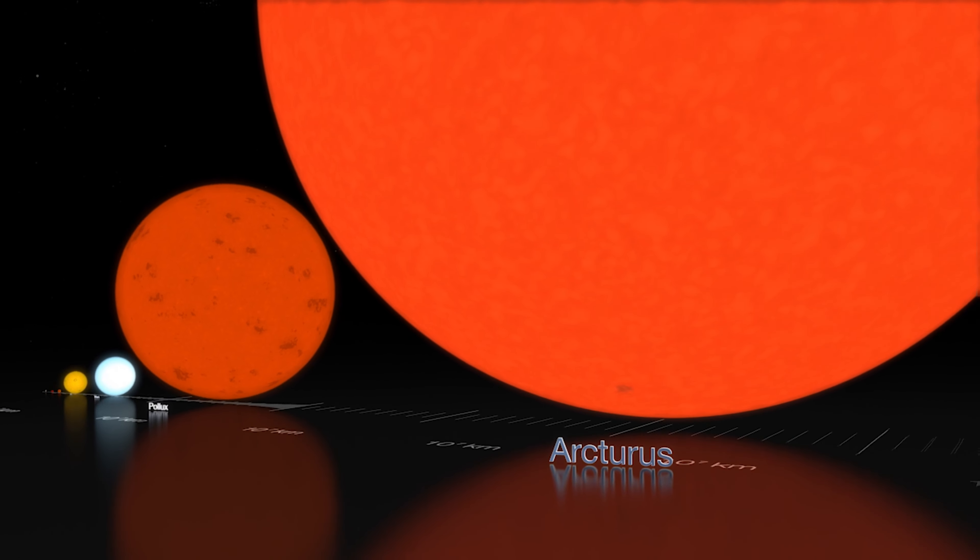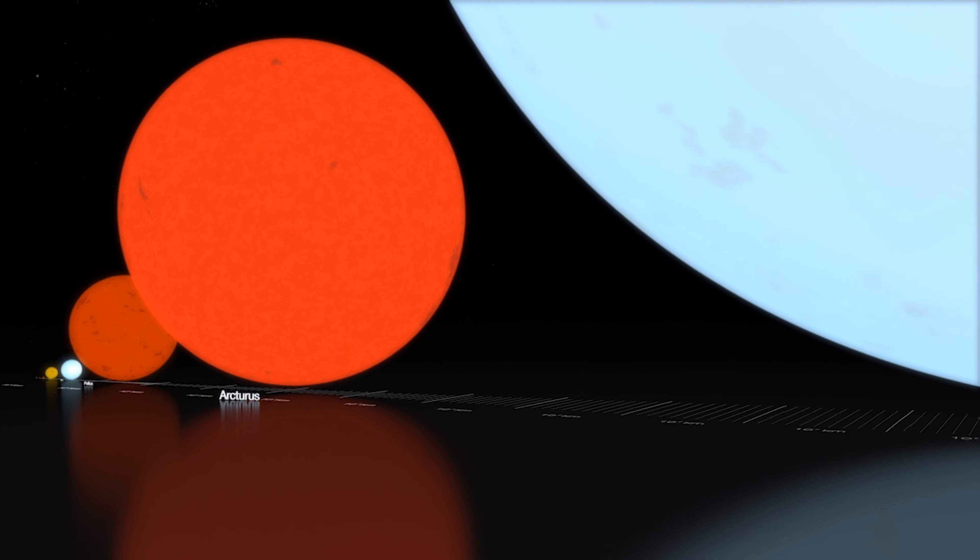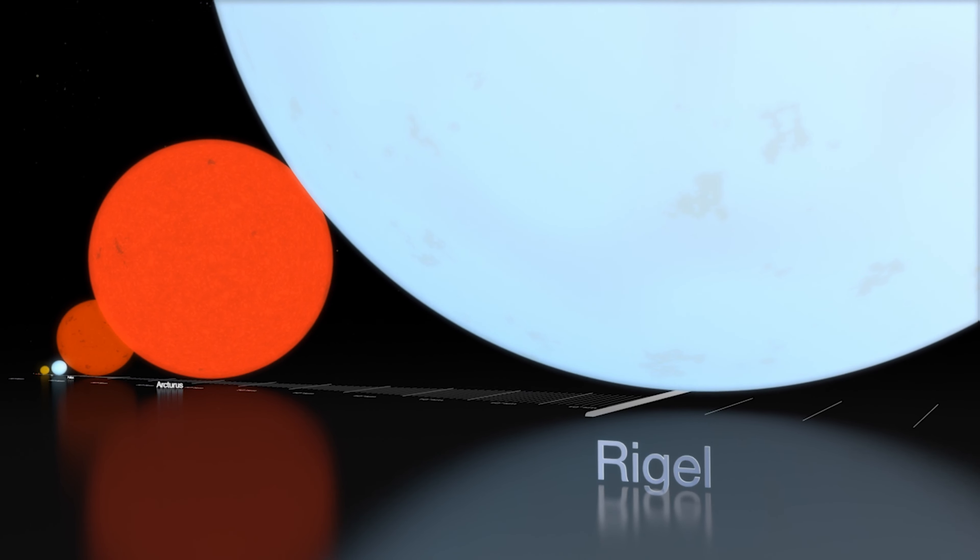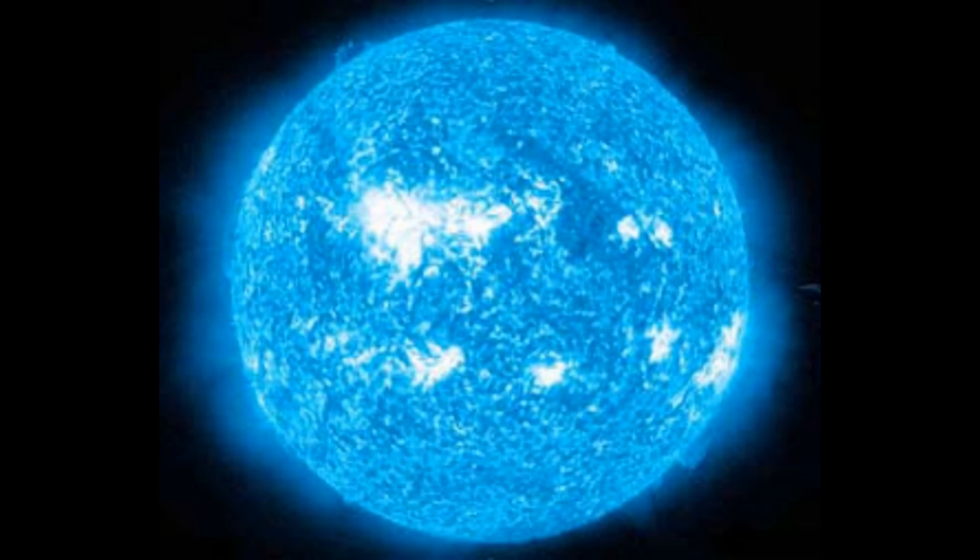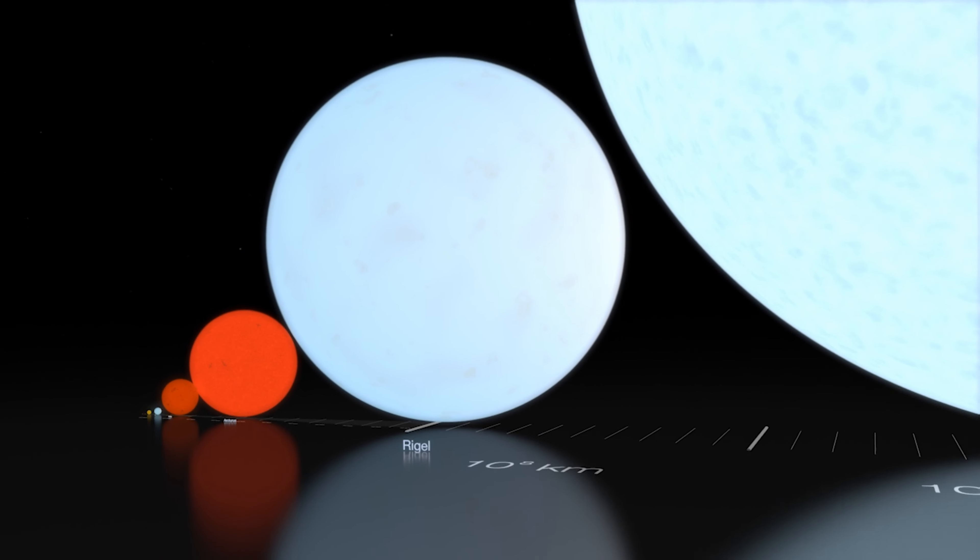Rigel is a blue supergiant star in the constellation of Orion. Its surface temperature is also far hotter than the Sun, around 21,000 degrees Fahrenheit or 11,600 degrees Celsius, compared to 10,000 degrees Fahrenheit or 5,500 degrees Celsius for the Sun. In terms of overall size, Rigel measures 79 times the diameter of the Sun.